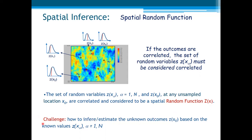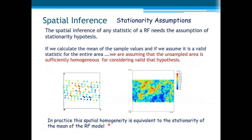Here comes the challenge: how to infer and estimate the unknown outcomes based on the known values z(x_α). For that, we need some assumptions about the model which allow any spatial inference procedure. For example, if we calculate the mean of the sample values and assume it is a valid statistic for the entire area including unsampled locations, we are assuming that the unsampled area is sufficiently homogeneous — considering a valid stationary hypothesis. In practice, this spatial homogeneity is equivalent to the stationarity of the mean of the random function model.